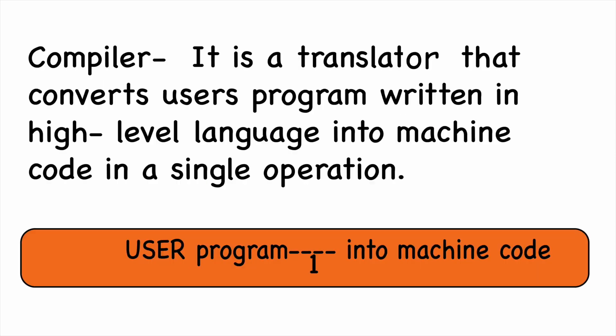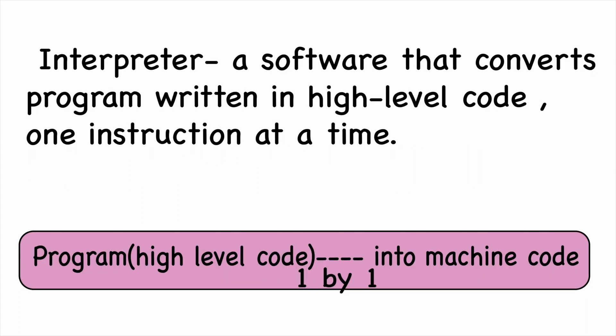Compiler: It is a translator that converts the user's program written in high-level language into machine code that a computer can understand. Interpreter: This performs the same task as a compiler. The only difference is that the interpreter converts the program into machine code line by line.